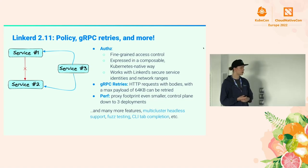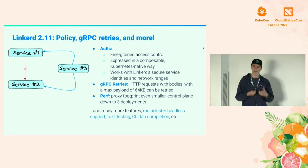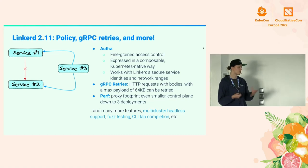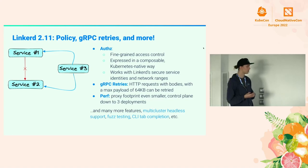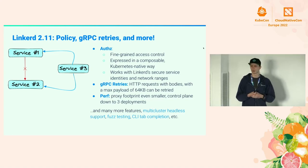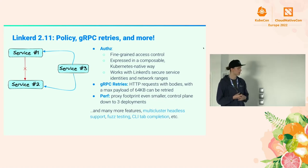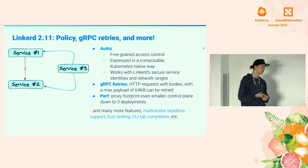We also added gRPC retries — HTTP requests with bodies. If you have an HTTP POST request with a body and you want to retry it, it turns out to be a pretty complex problem, especially keeping overhead minimal when you have tens of thousands of connections running. But we managed to do it. We also managed in the process to reduce the proxy footprint even more — the control plane is down to three deployments. We expanded multi-cluster with headless support for stateful sets, added fuzz testing, some CLI tab completions, and a few other goodies.